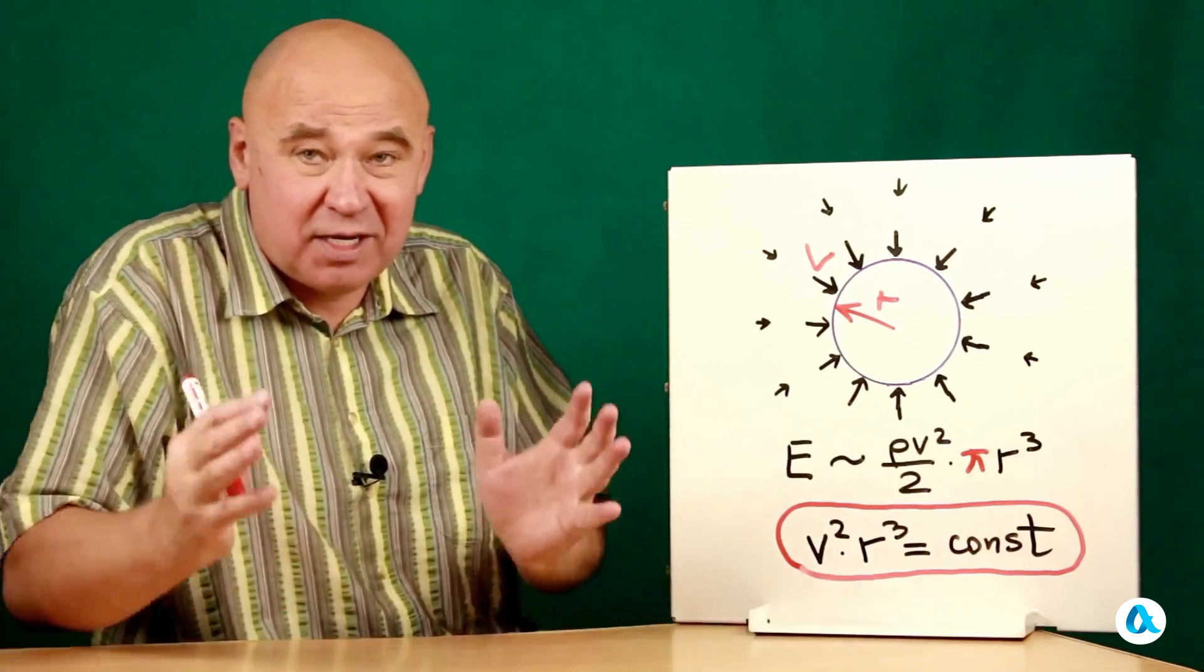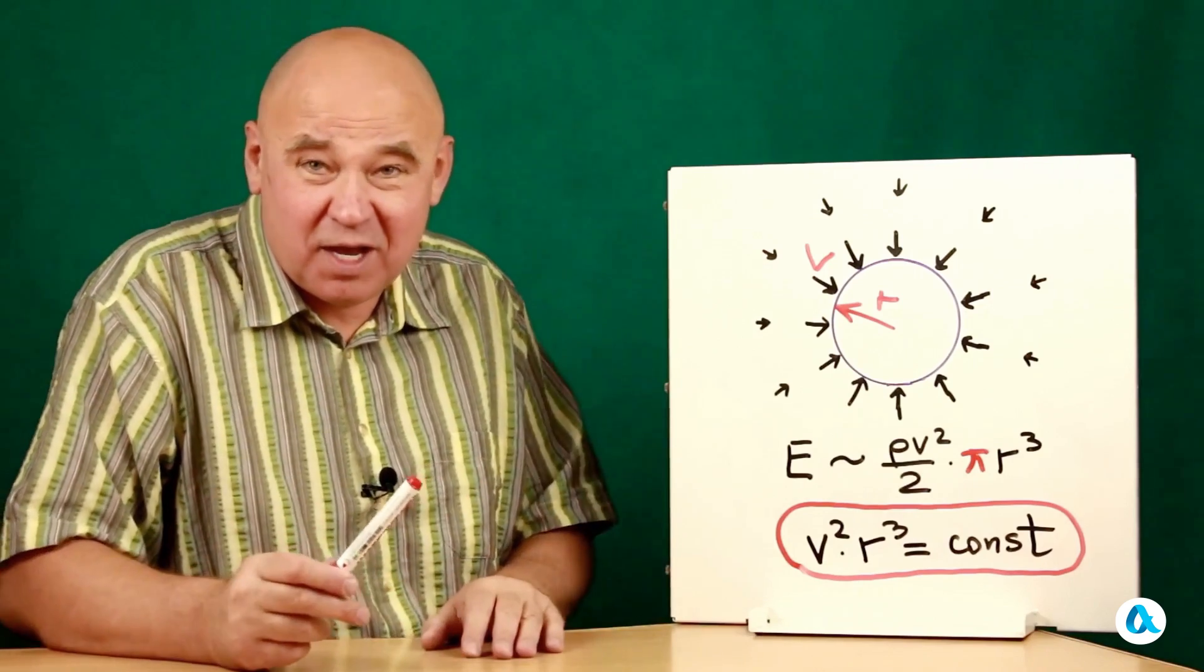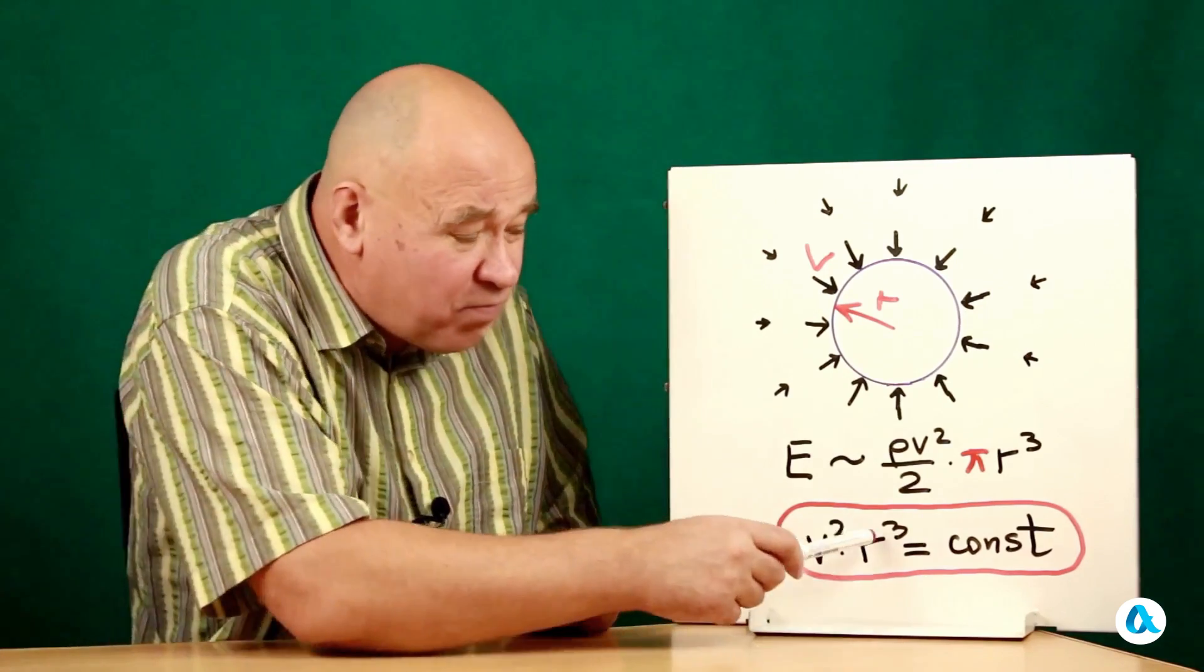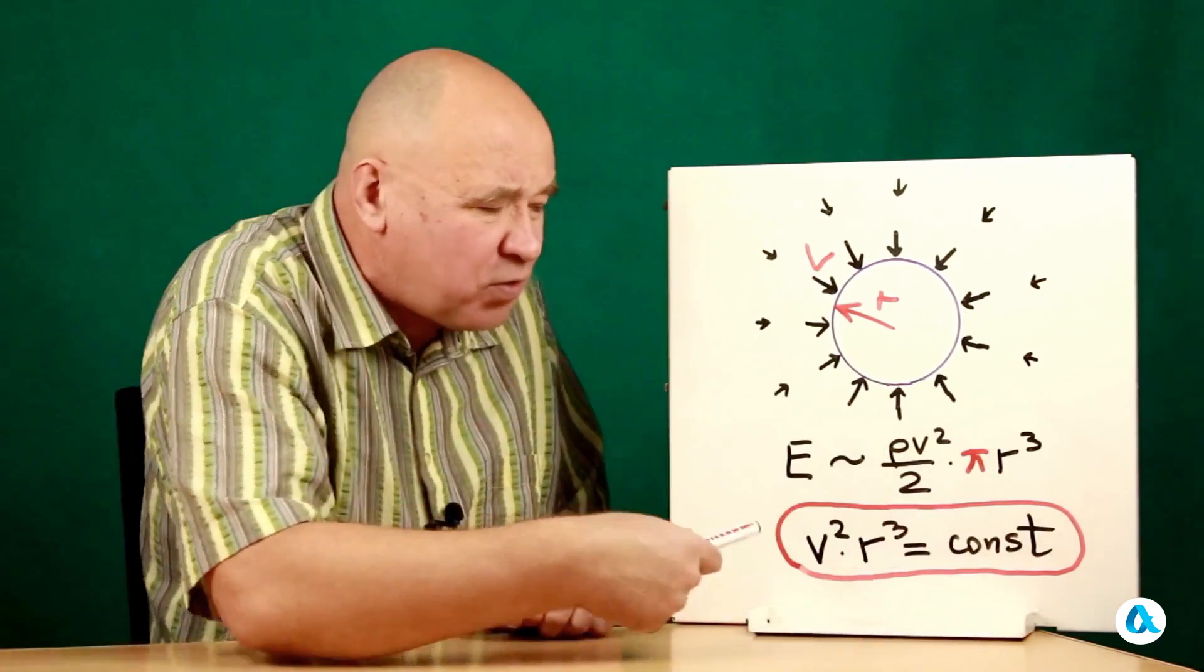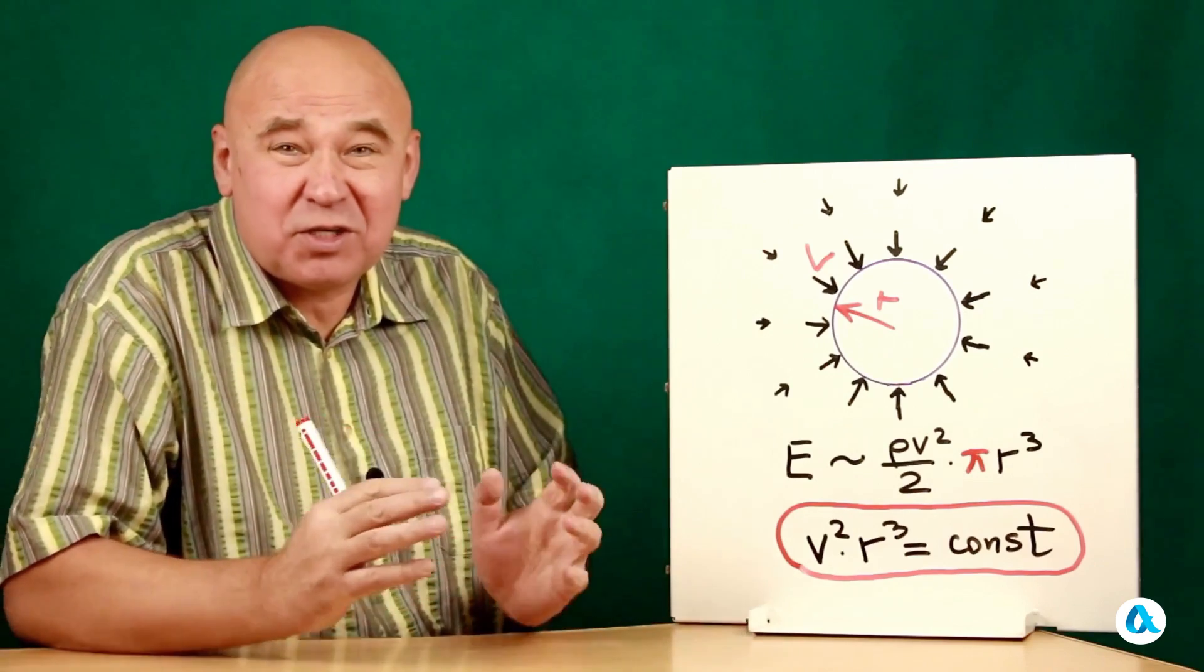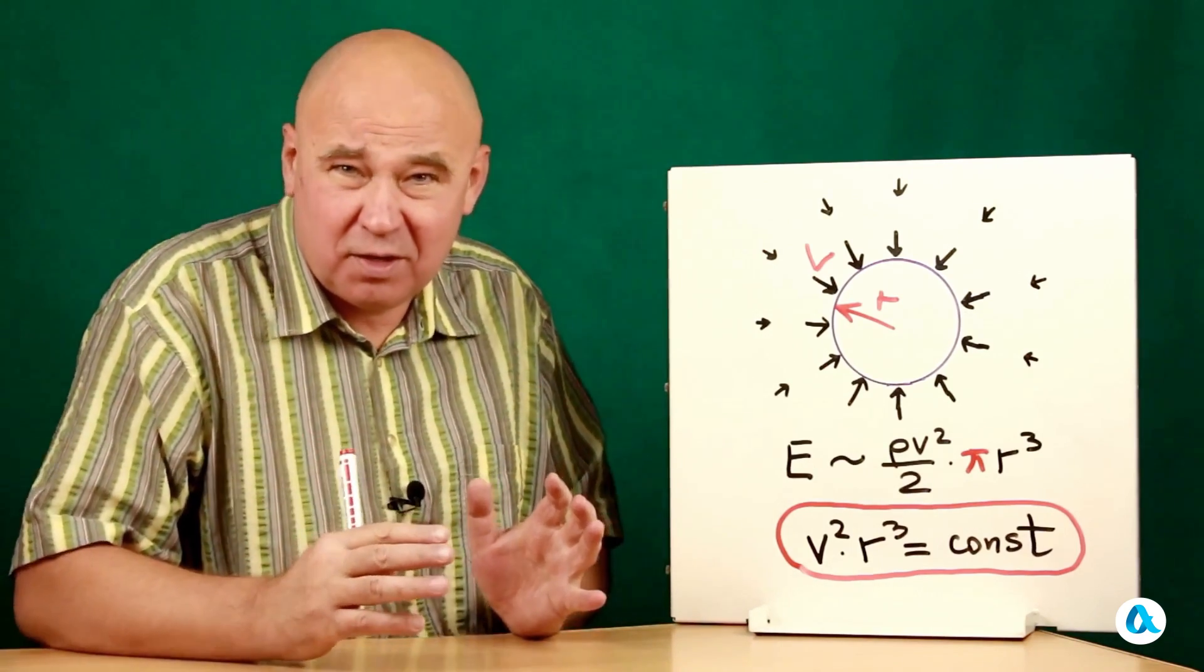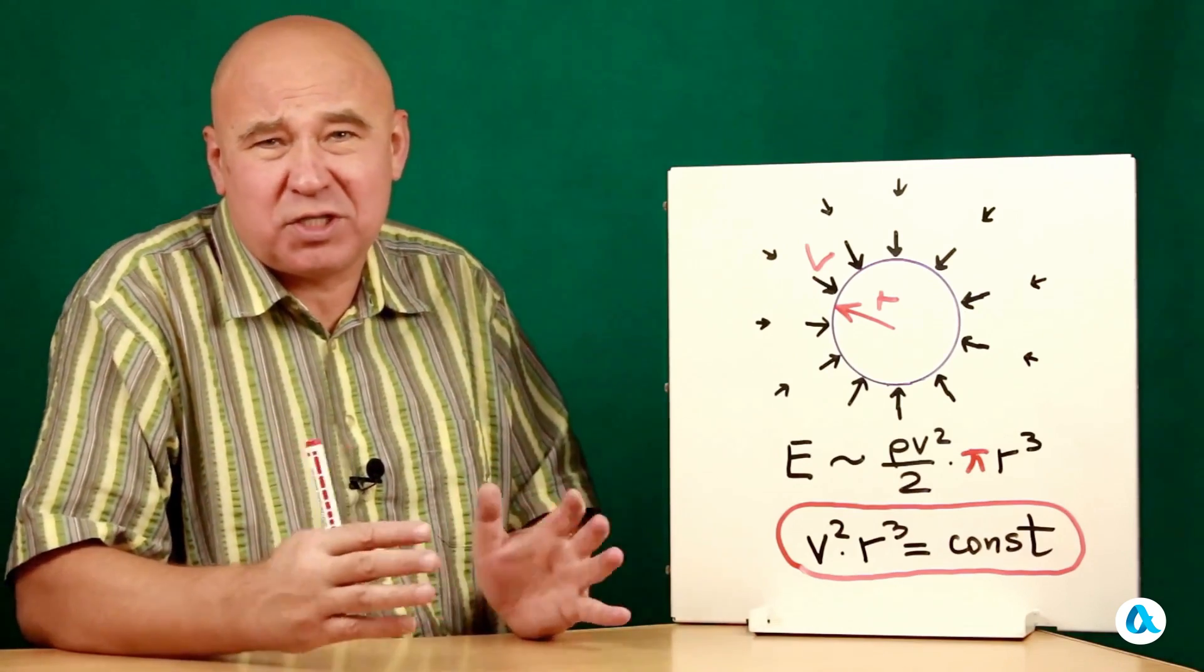Now watch, let the radius of the cavity decrease by 10 times. However, this implies that the volume of r³ has decreased by a factor of 1,000. Consequently, in order to maintain the constancy of this work, the square of v must increase by a thousand times. Well the speed itself will increase by the square root of a thousand, which is about 30.